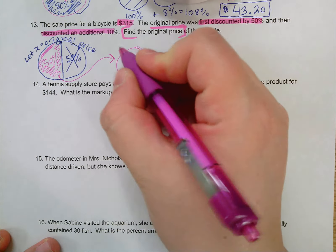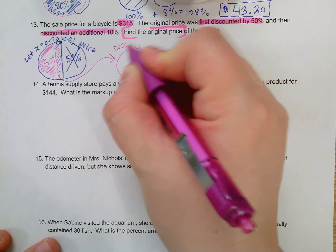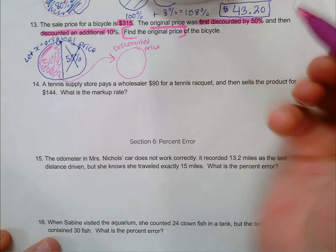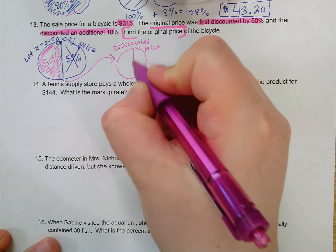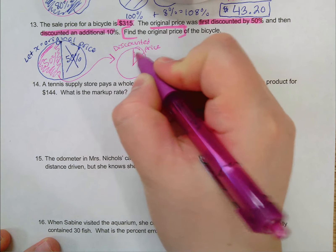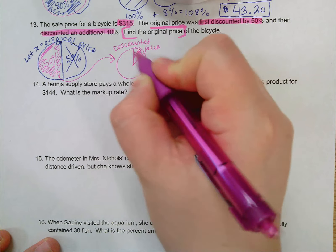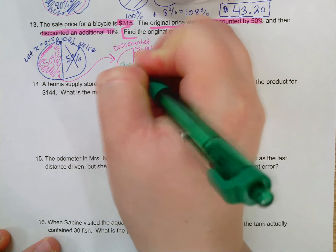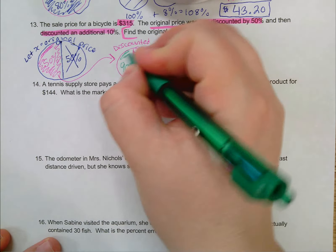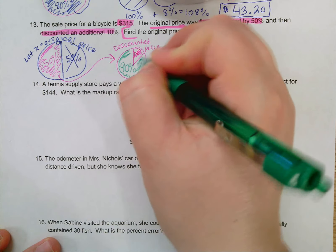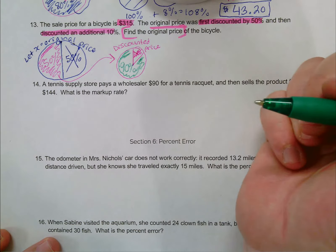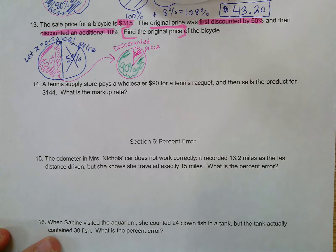Now on my discounted price, it's discounted an additional 10%. So this 10% here, I don't have to pay for that, but it means that I do have to pay for the remaining 90%. So I do have to pay for this green chunk here. I know that after those two discounts, my final price was $315.